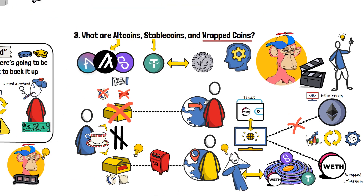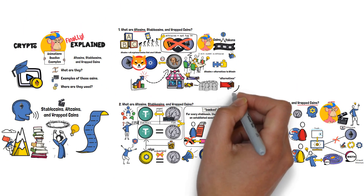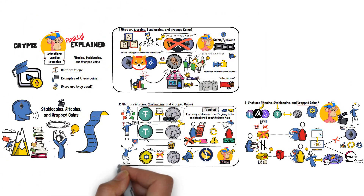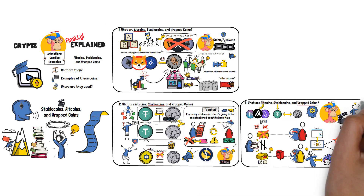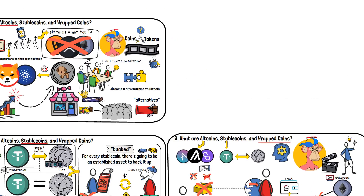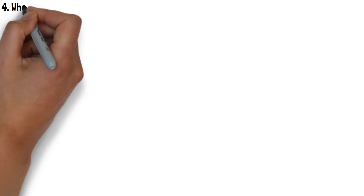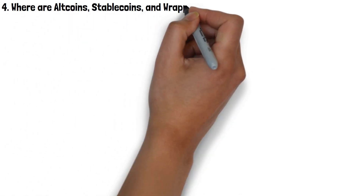Up to this point in the video, we've covered what are altcoins, stablecoins, and wrapped coins. Now, we definitely need to talk about where all of these assets are used, and why do they even exist in the first place?